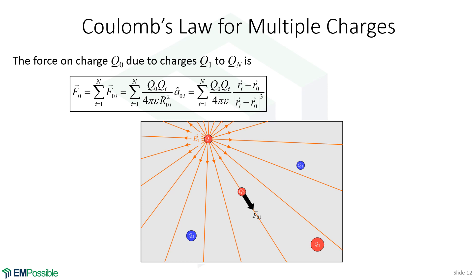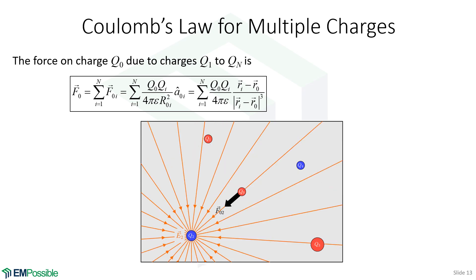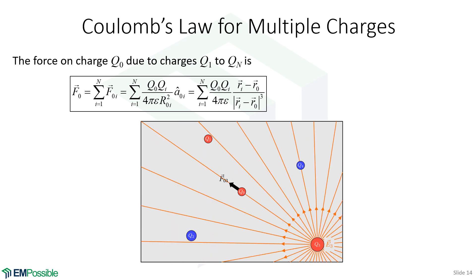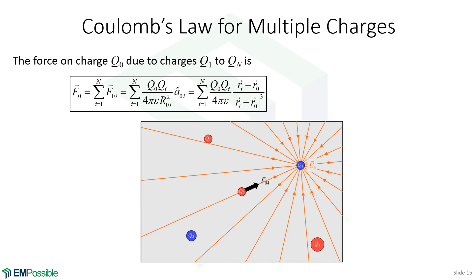Here we're drawing the electric field intensity throughout this entire problem space due to that first charge. We're not going to put numbers to it — just illustrating how we apply Coulomb's law to multiple charges. We calculate the field due to the first charge, then apply Coulomb's law to get the force on Q₀. We move to the second charge — the field is converging because it's negative — calculate that force. Then the third charge, where the field is diverging, and the fourth charge, which is converging because it's negative.